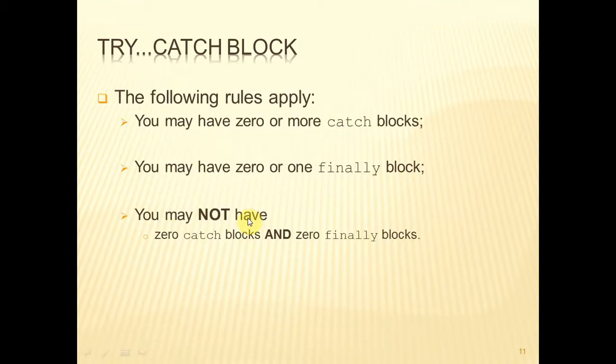So some rules about catch- and finally-blocks. A try-block may have zero or more associated catch-blocks. A try-block may have zero or one finally-block. And a try-block has to have at least one of them. You cannot have zero catch-blocks and zero finally-blocks.